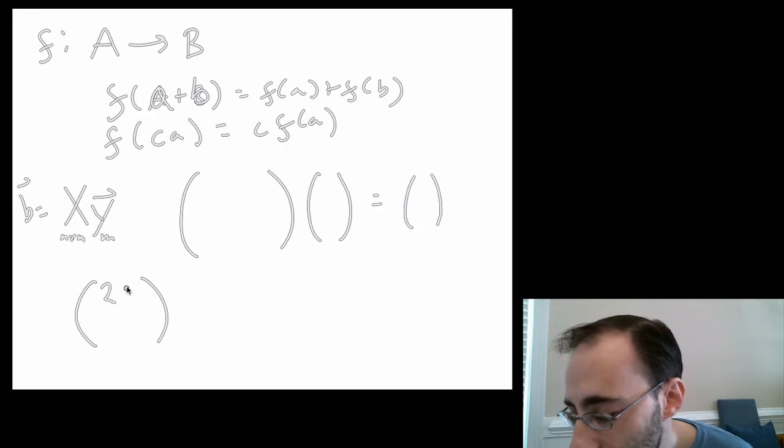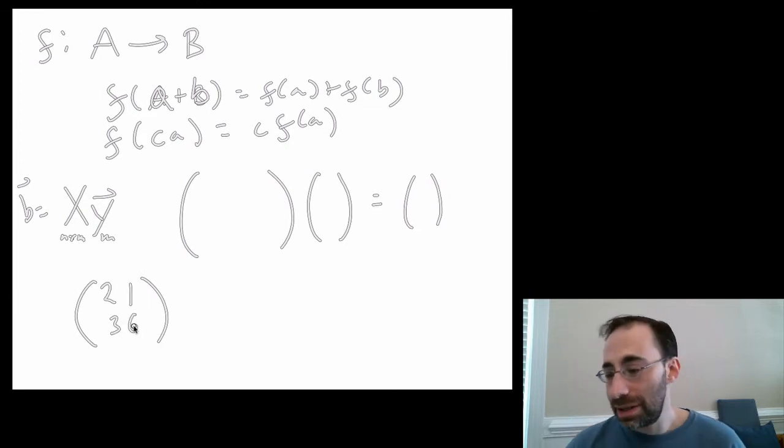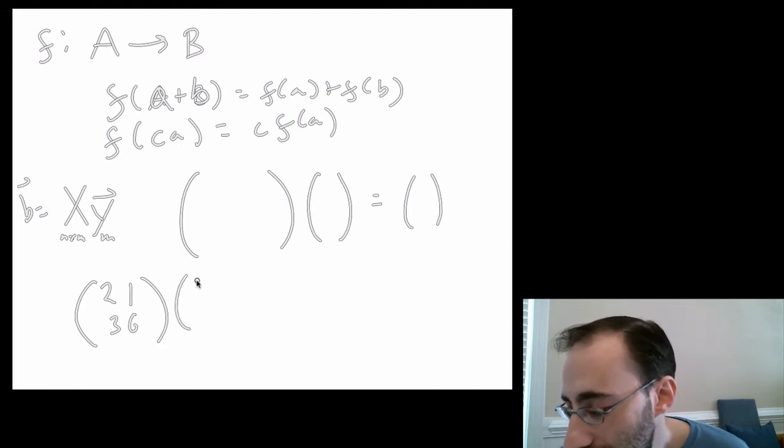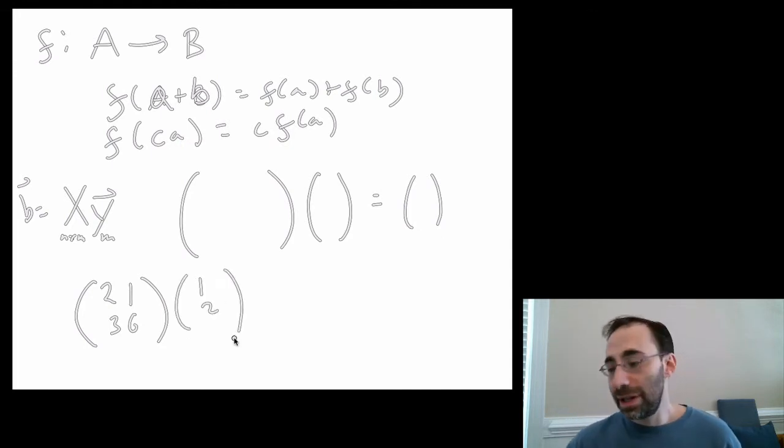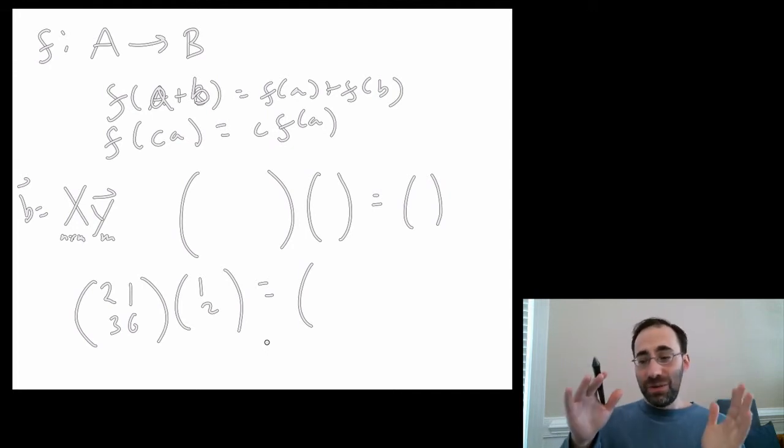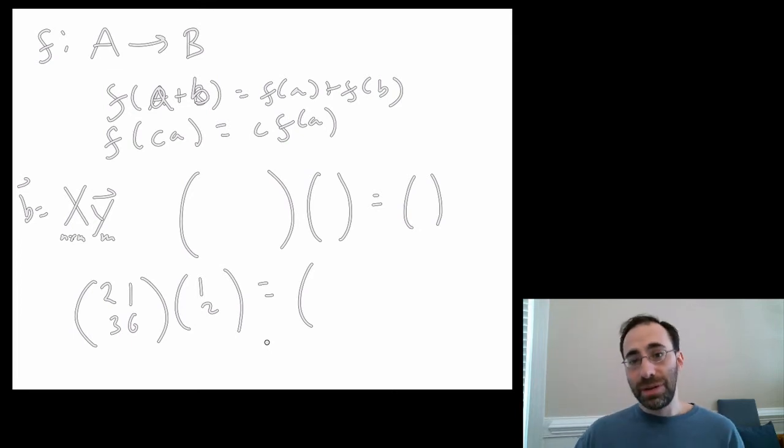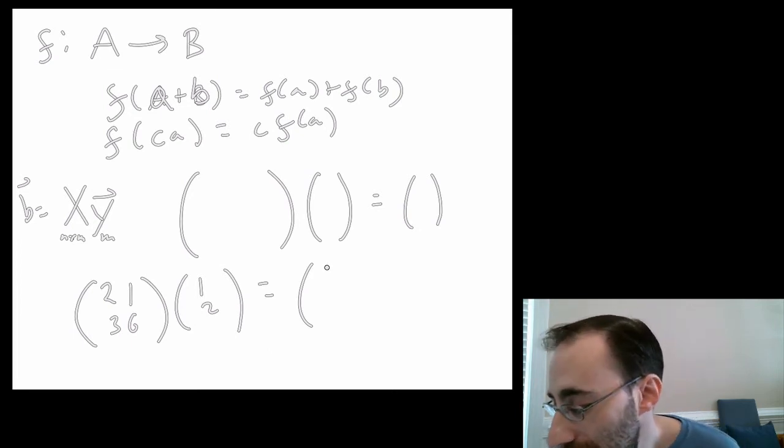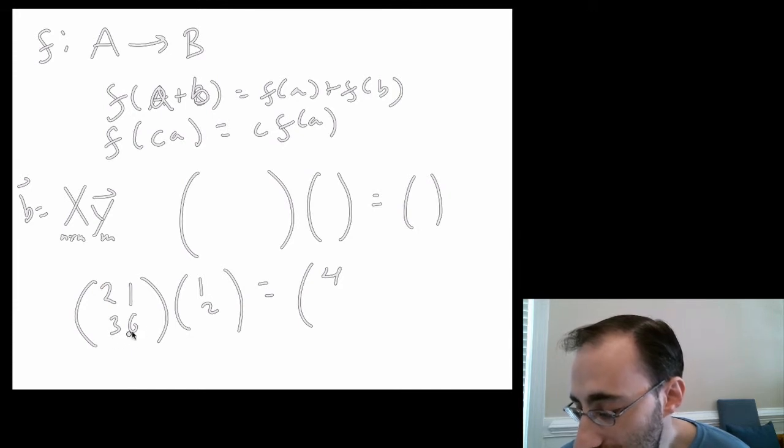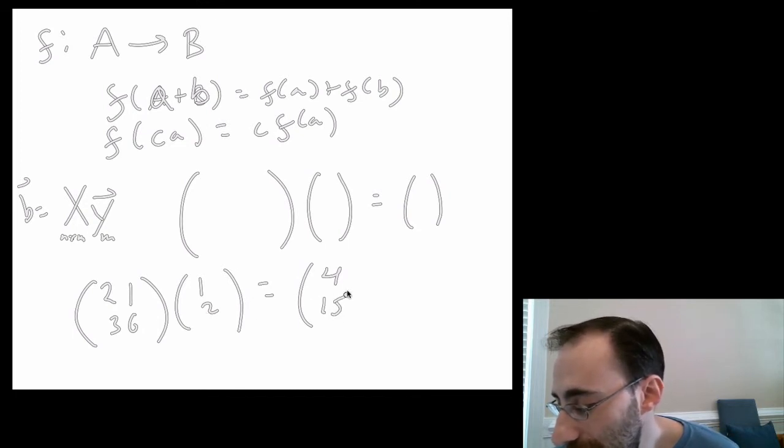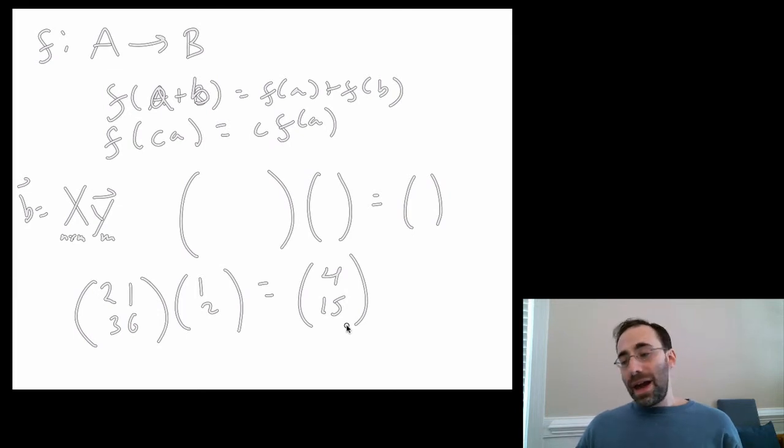Let's say 2, 1, 3, 6. There's a matrix. Let's say you have 1, 2. We can multiply this together. Remember, you take this, dot it with the other one. You take 2, 1, dot it with 1, 2. That's 2 times 1 plus 1 times 2 is 4. And then you take 3, 6 and dot it with 1, 2. So that's 3 times 1 is 3 plus 6 times 2 is 12. So that's 3 plus 12 is 15. And this is our new one.